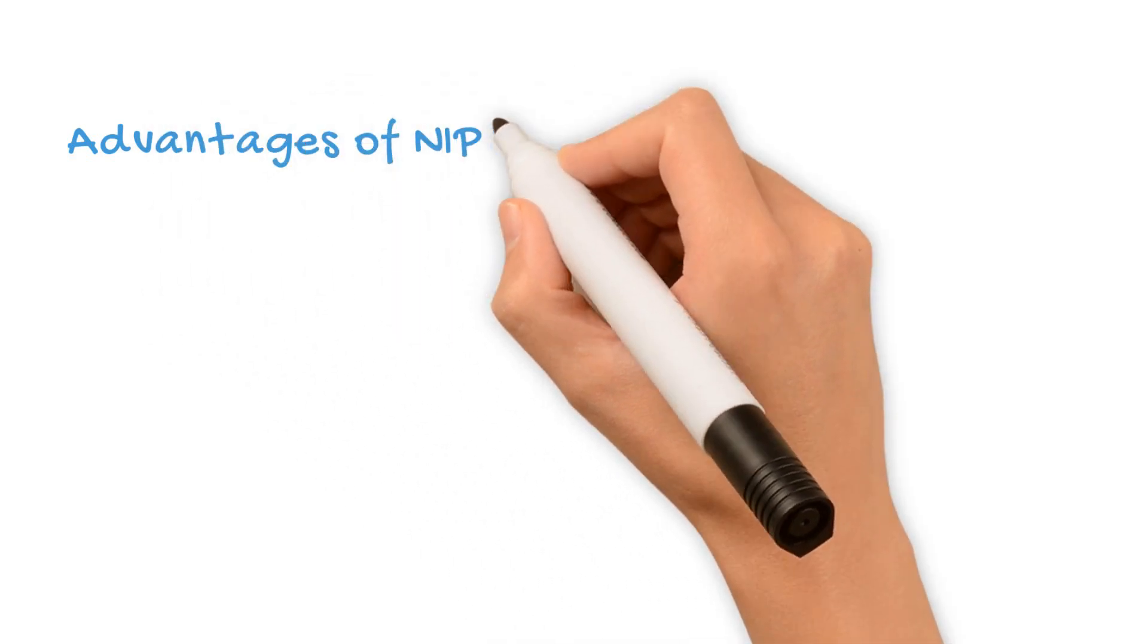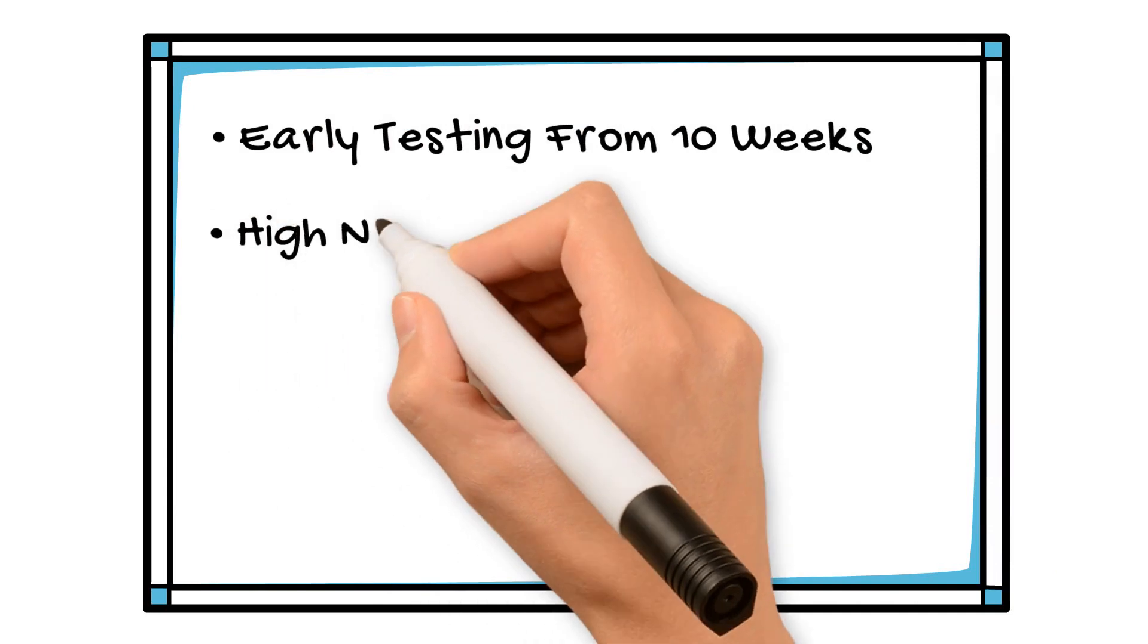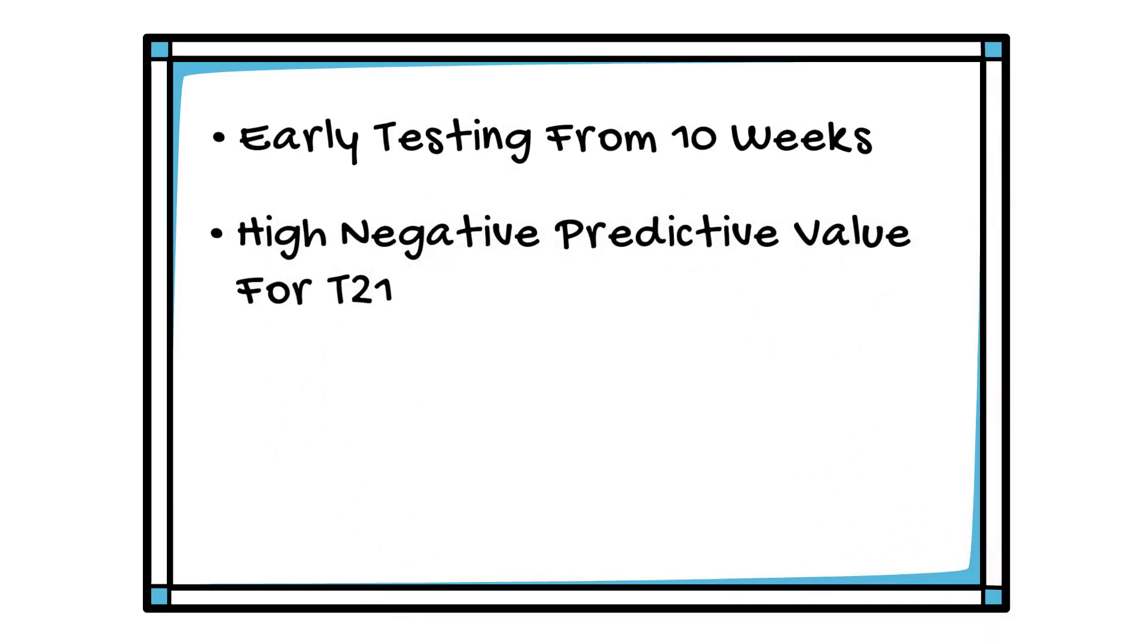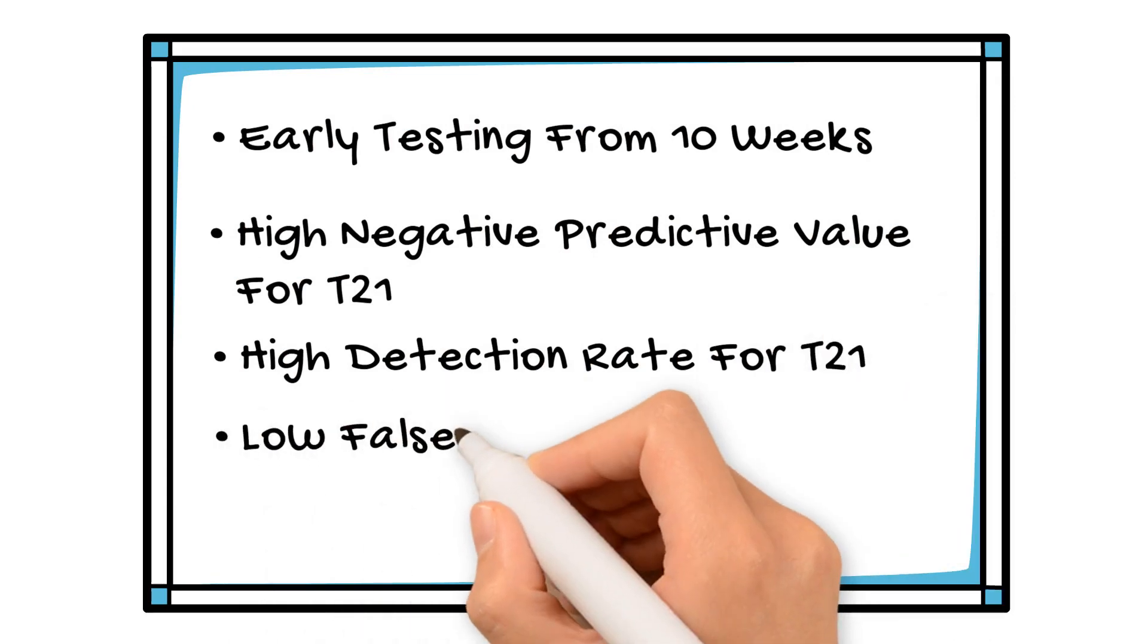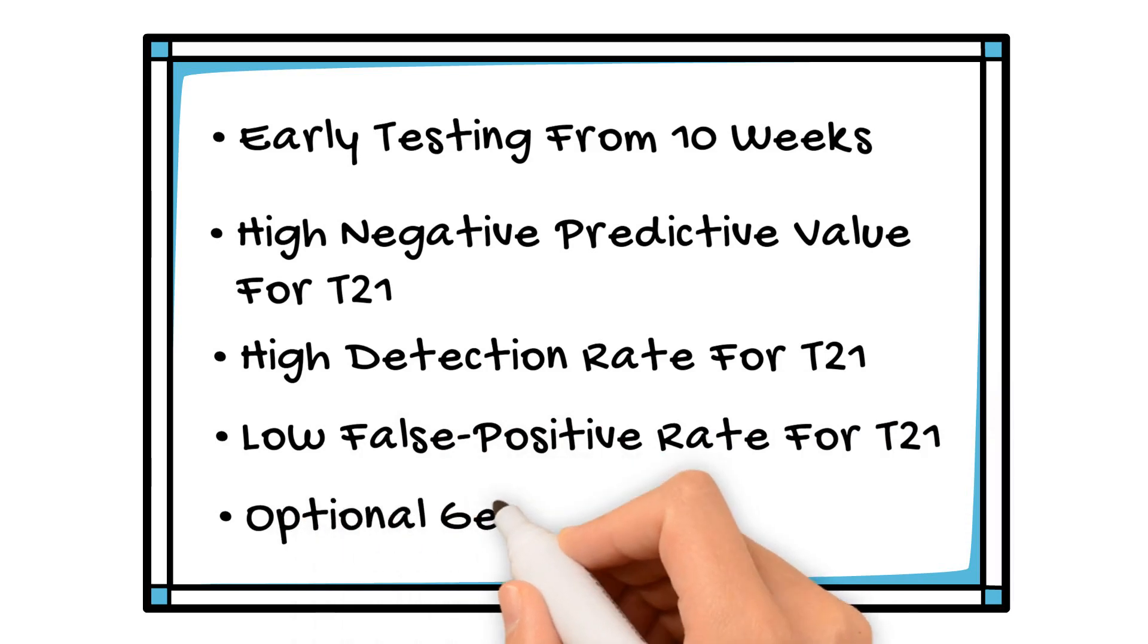Advantages of NIPT: early testing from 10 weeks, high negative predictive value for T21, high detection rate for T21, low false positive rate for T21, and optional gender reveal.